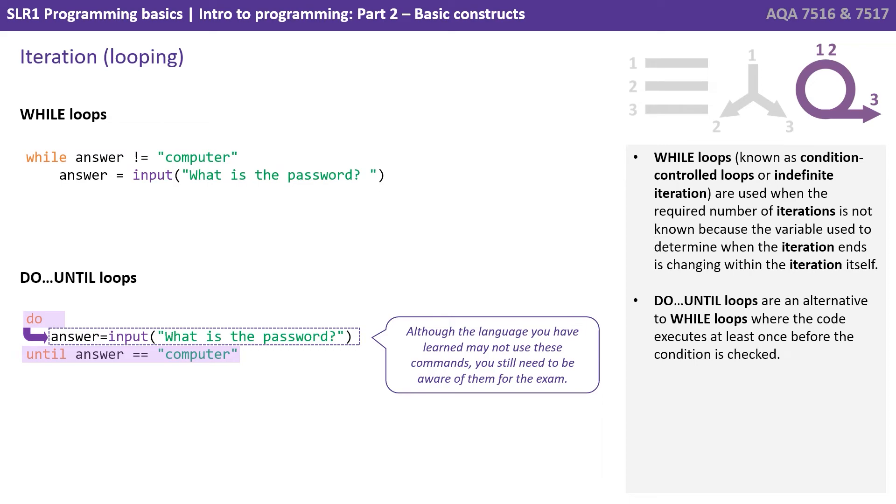Do-until loops are an alternative to while loops where the code executes at least once before the condition is checked. If we look at these two condition-controlled loops, we'll see the while loop might not actually be run once—while answer is not equal to computer. That's being evaluated, and there's a chance that the loop will not be entered, so the code inside could be run zero times.